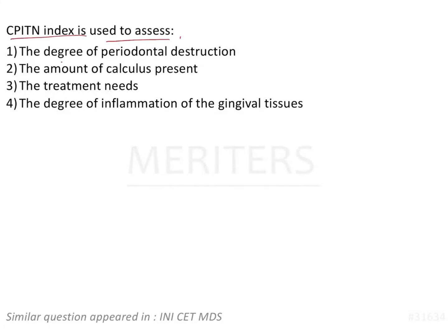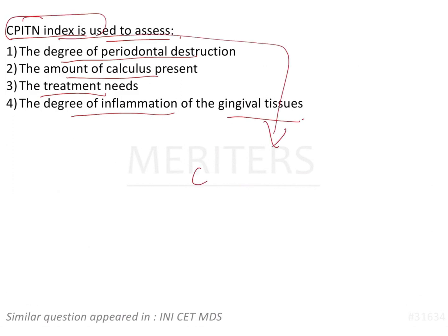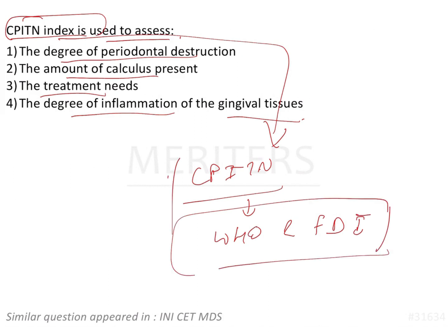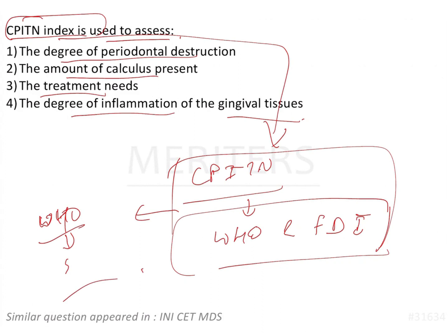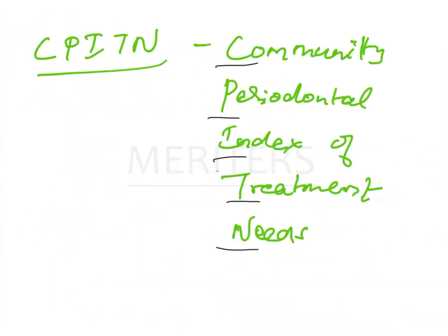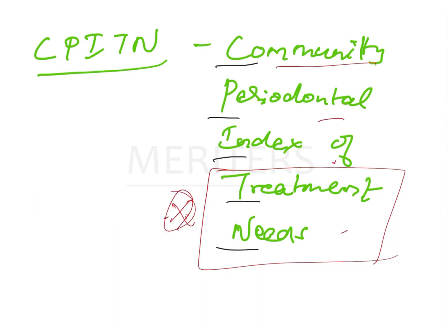CPITN index is used to assess the degree of periodontal destruction, amount of calculus, treatment needs, and degree of inflammation of gingival tissue. CPITN is one of the famous indices given by WHO and FDI Joint Committee. WHO has recognized this index as one of the standard indexes to be included in all kinds of oral health surveys. CPITN stands for Community Periodontal Index of Treatment Needs.